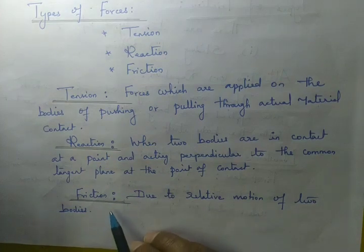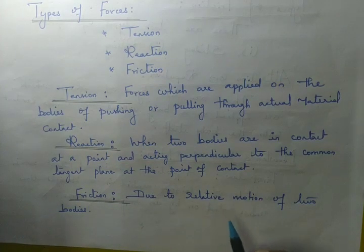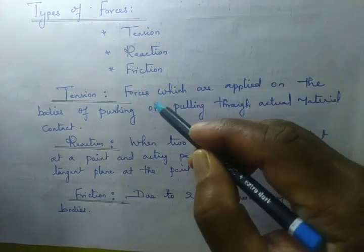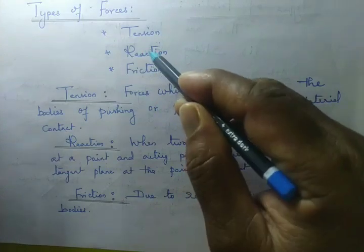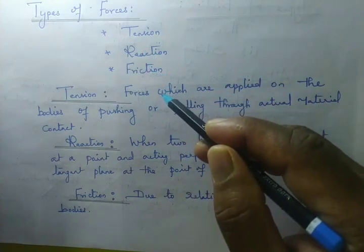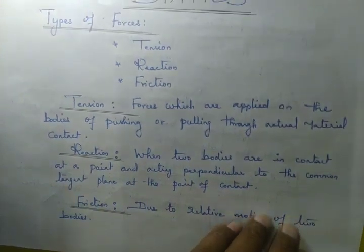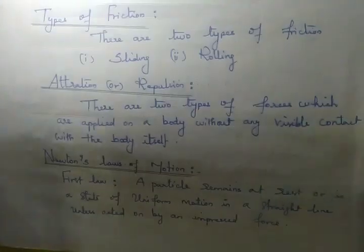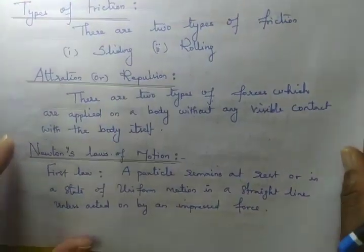Then, friction. Due to relative motion of two bodies, that is friction. So the three types of forces are tension, reaction, and friction — those are the definitions.